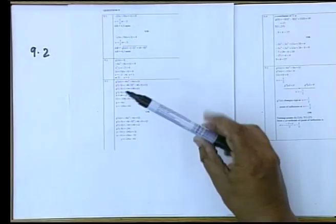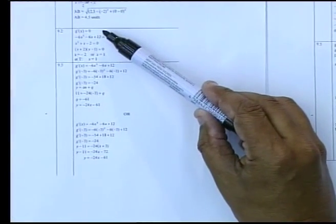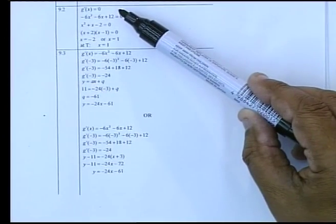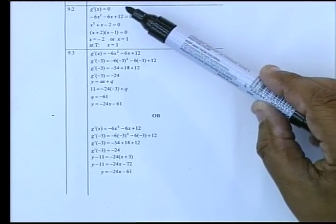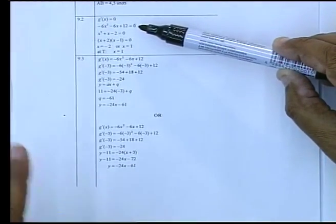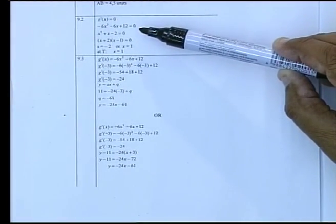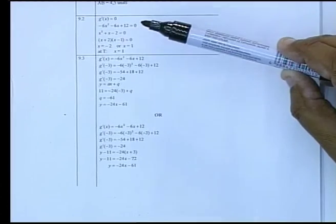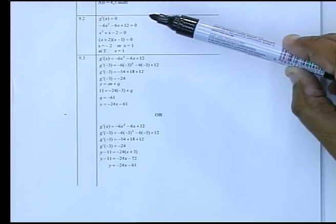If g dash is equal to 0, you are taking the derivative, which is minus 6x squared, minus 6x plus 12 equal to 0.